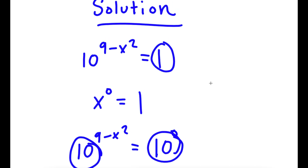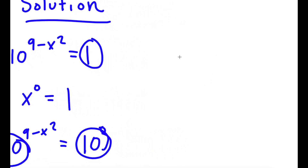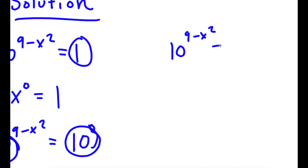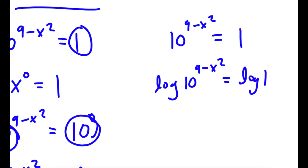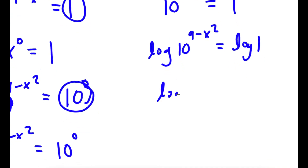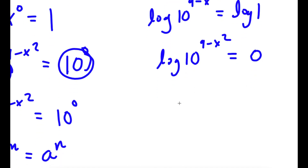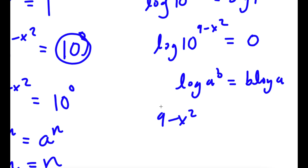I actually have another solution method. Again, I have 10 to the power of 9 minus x squared is equal to 1, and this time I'm going to take the log on both sides. So I have log of 10 to the power of 9 minus x squared is equal to log 1. Log of 1 is 0, so that side becomes 0. Using the power rule — log of a to the power of b equals b times log a — I get 9 minus x squared times log 10 is equal to 0.